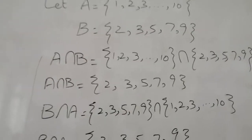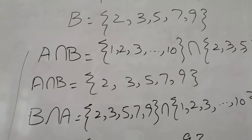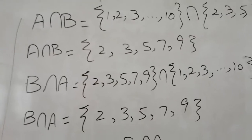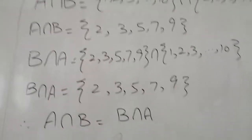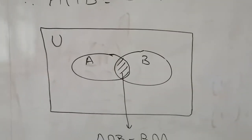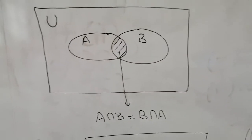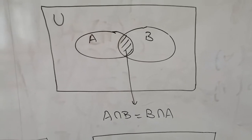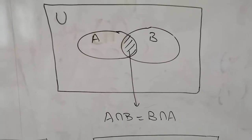Now we take B intersection A. Keep in mind that we write B set elements first and then A set elements. The intersection is again 2, 3, 5, 7, and 9 — the intersections are equal. Representing this with a Venn diagram using overlapping closed figures, the highlighted portion shows A intersection B equals B intersection A.